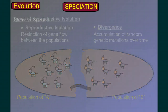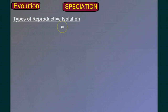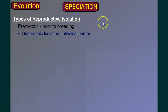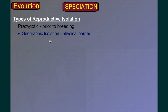Let's take a closer look at reproductive isolation, because there are different types. Some we can group together as prezygotic, or prior to breeding. The example I gave was geographic isolation — there's a physical barrier. In my example it was a canyon, but it could be a river, an ocean, a mountain range, or depending on the species, even a four-lane highway.